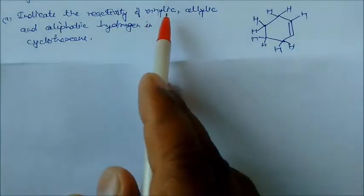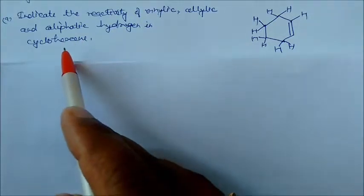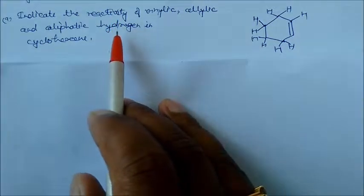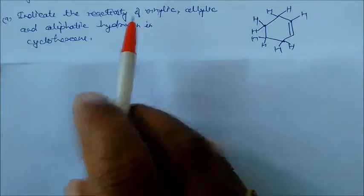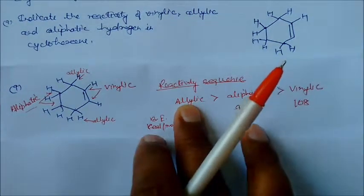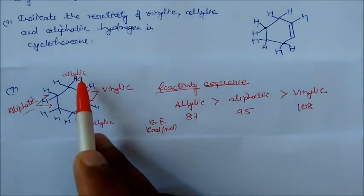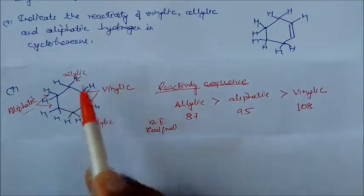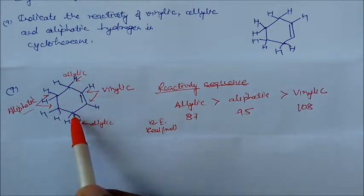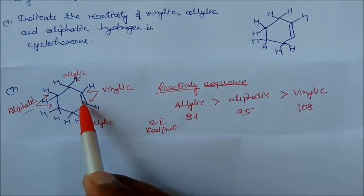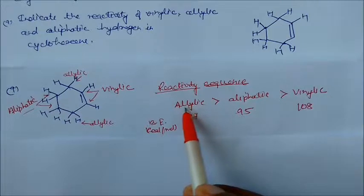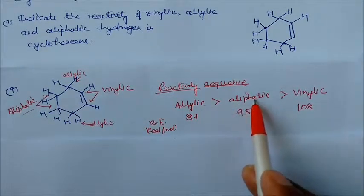Indicate the reactivity of vinylic, allylic, and aliphatic hydrogen in cyclohexene. The carbons adjacent to the double bond are allylic positions — there are two allylic positions. The carbons directly attached to the double bond are vinylic, and the remaining carbons are aliphatic. In reactivity: allylic hydrogen is most reactive, followed by aliphatic, and vinylic hydrogen is the least reactive.